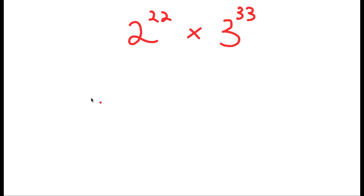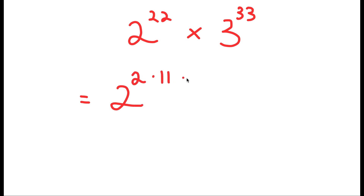To solve this, I'm going to first rewrite 2 to the power of 22 as 2 to the power of 2 times 11. And I have this times 3 to the power of 3 times 11.